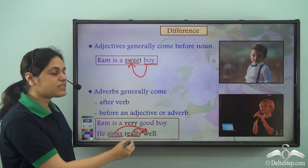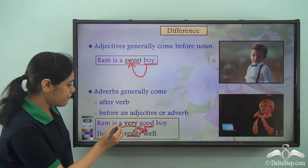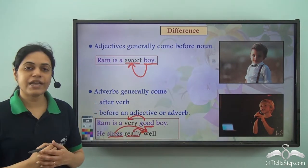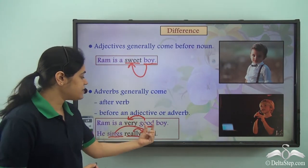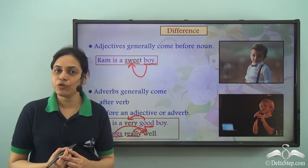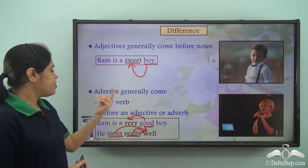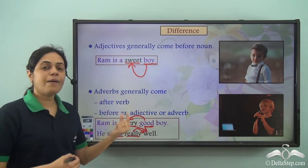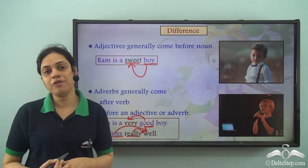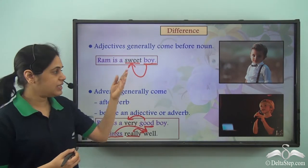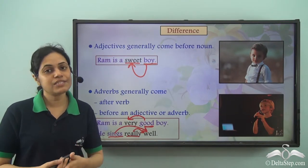In the sentence 'Ram is a very good boy,' good is the adjective and very is the adverb describing that adjective — very comes before the adjective good. So adjectives generally come before the noun, whereas adverbs come after the verb they describe but before the adjective or adverb they describe. However, these are not hard and fast rules — it may differ in some cases.